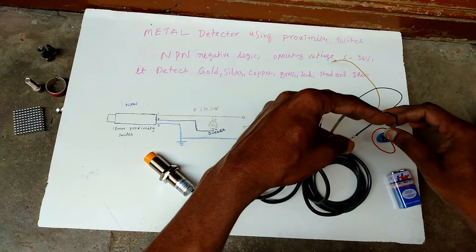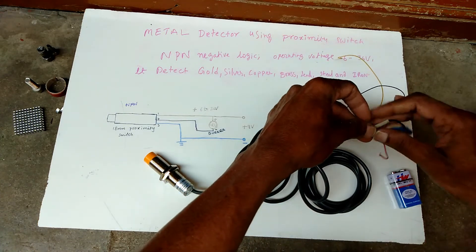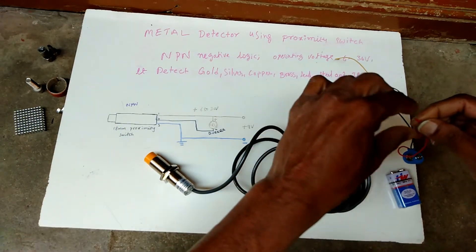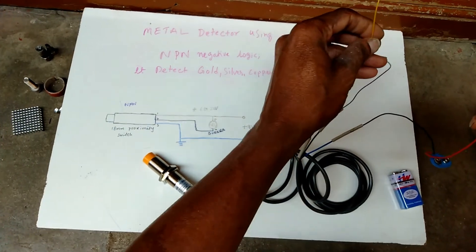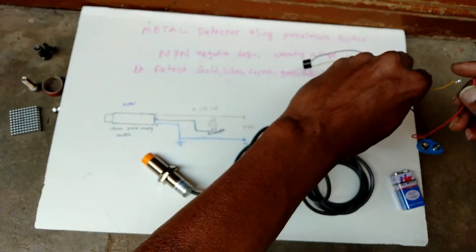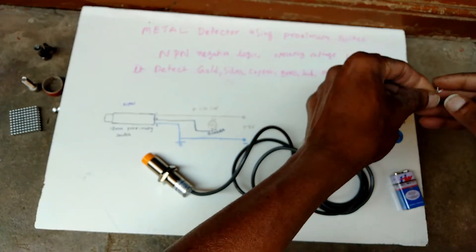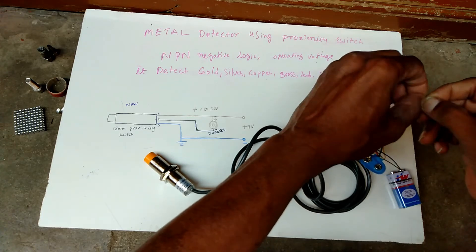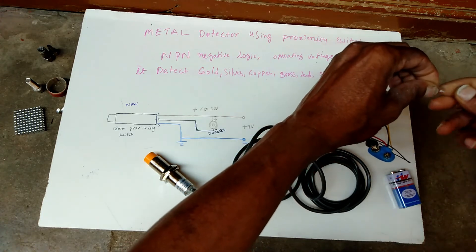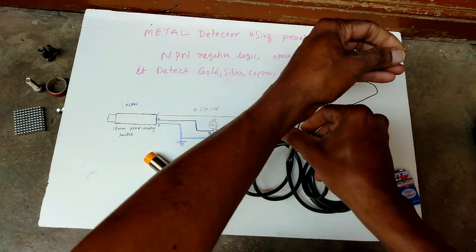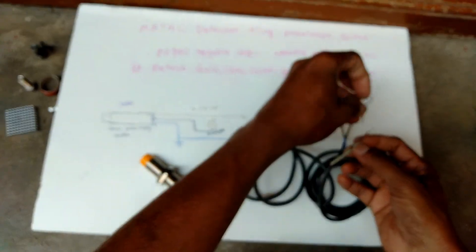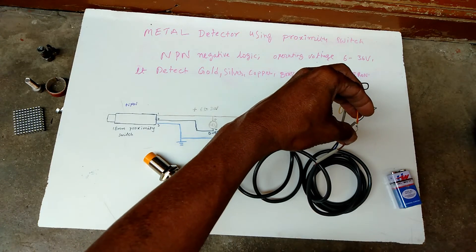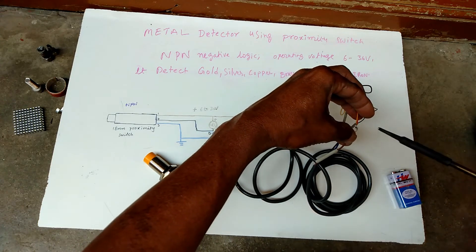This positive wire and this buzzer's positive, both we have to make one single wire, and connect to this brown positive logic, this proximity switch brown wire.